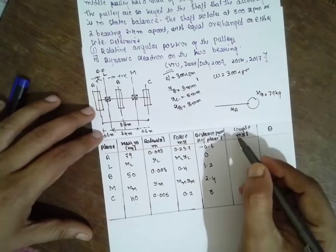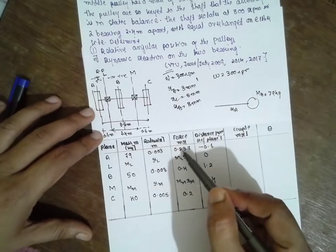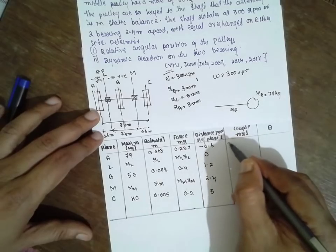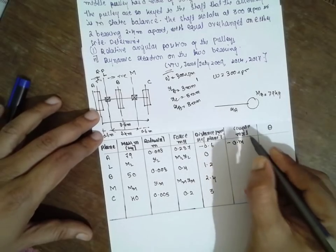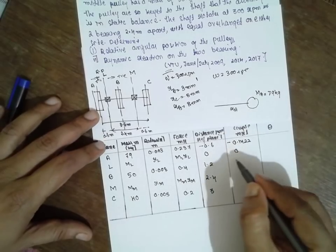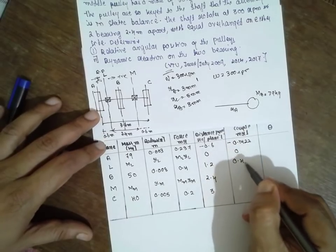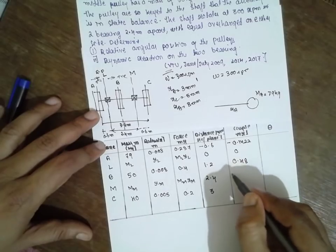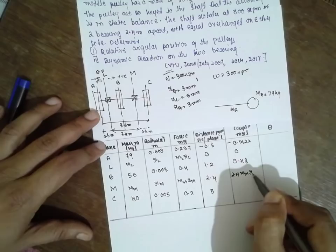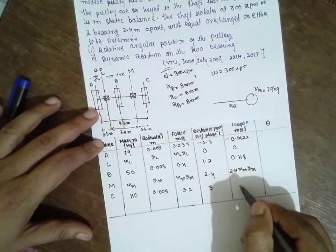The couple is nothing but force times distance. You can get the couple. It will be minus 0.142. Next is 0. Then 0.48. Then 2.4 times MM times RM. And 0.6.